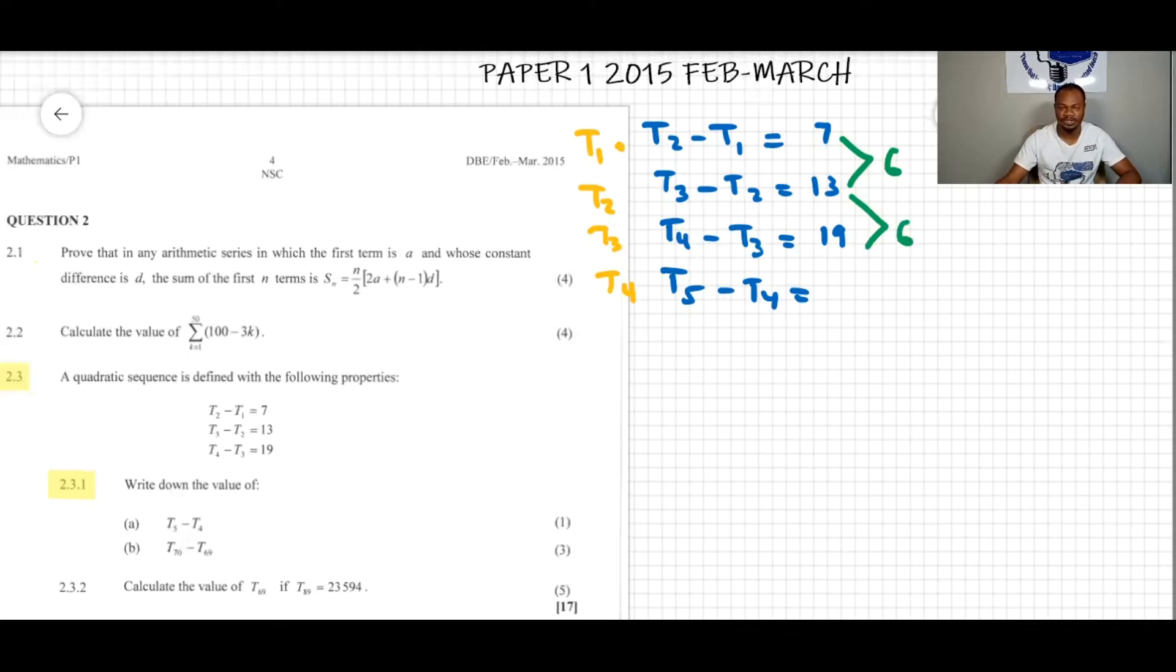T2 minus T1 is equal to 7, and then T3 minus T2 equals 13. We can see that the difference is 6. Now to find the value here, we can just add 6 to this term and we will get T5 minus T4, which will be 25.